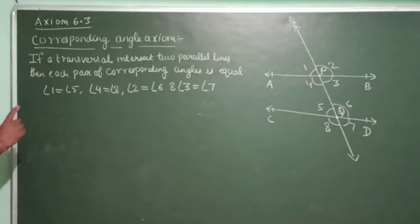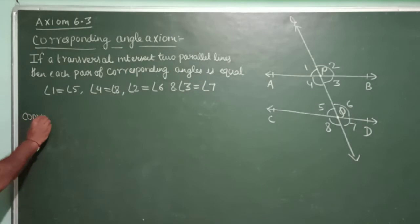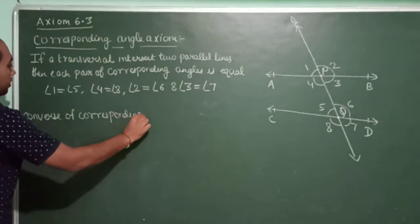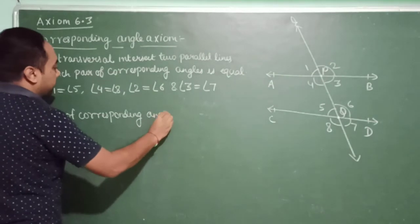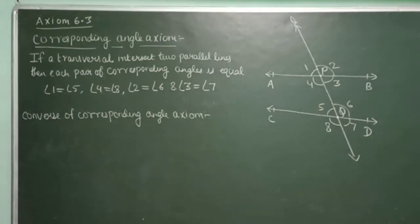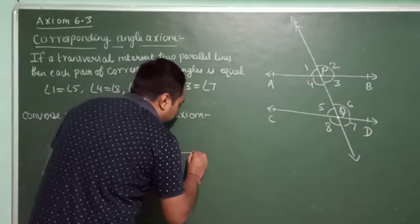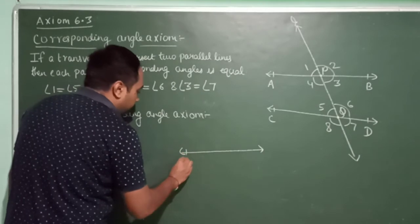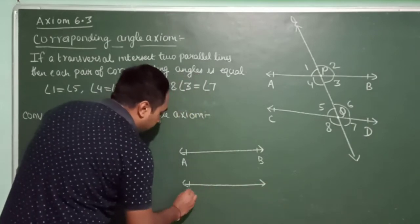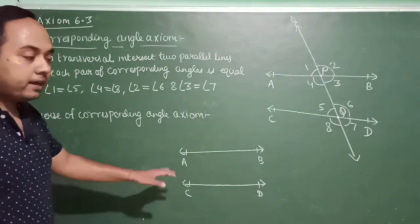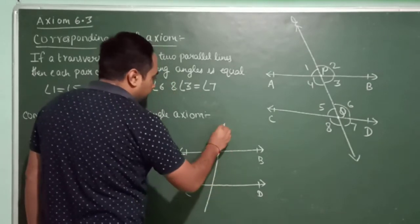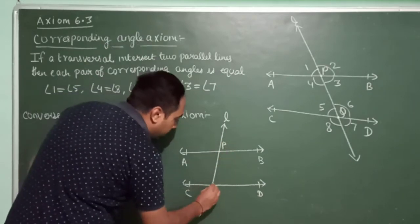Now next is the Converse of Corresponding Angle Axiom. Converse means opposite. This time, there are two lines AB and CD — not parallel lines, just two lines — intersected by a transversal L at points P and Q respectively.